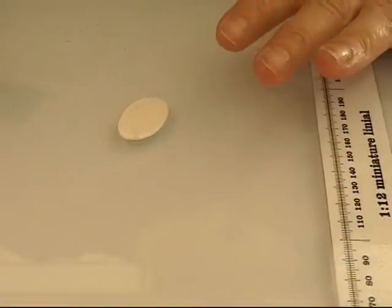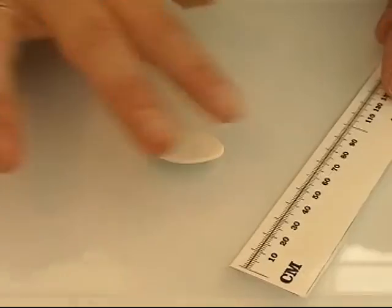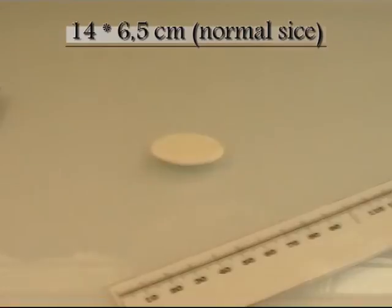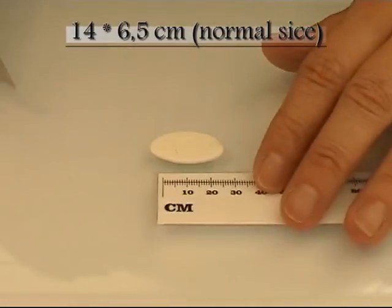I'm going to make a light switch, and for that I figured out that a Danish light switch is 14 by 6.5 centimeters.